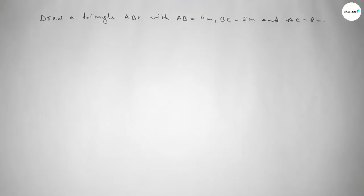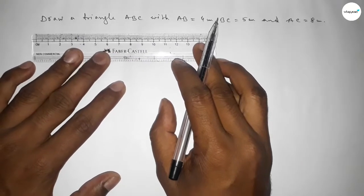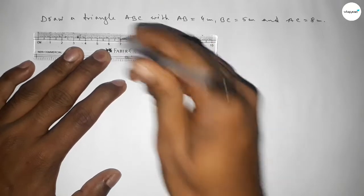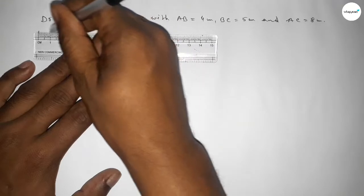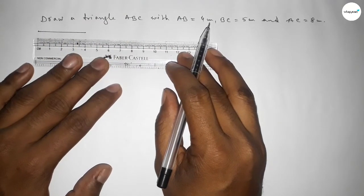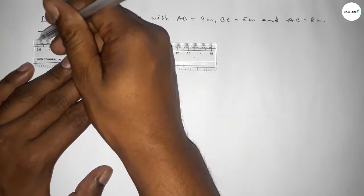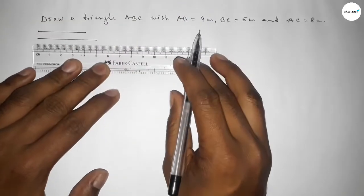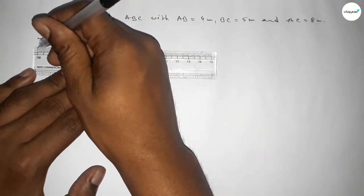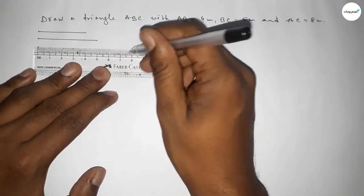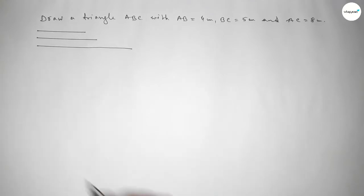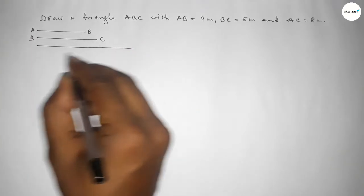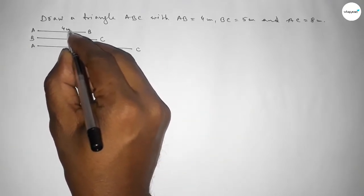First of all, we draw reference lines: a line of length 4 centimeters, a line of length 5 centimeters, and a line of length 8 centimeters. These represent AB = 4 cm, BC = 5 cm, and AC = 8 cm respectively.